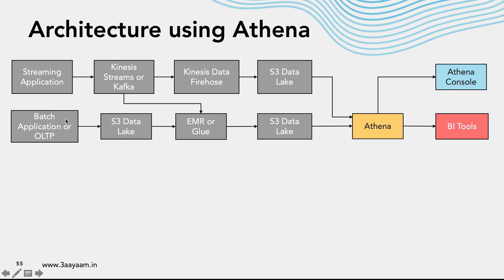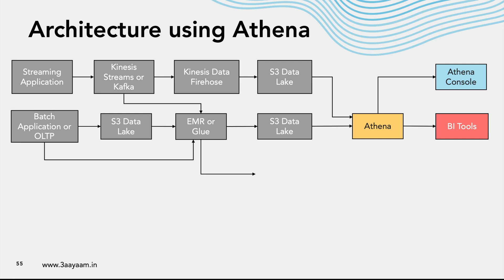The transformed data is stored in the S3 data lake. Since it is in S3, we can use Athena on top of it. Data generated by batch applications, OLTP databases, or streaming applications can be aggregated, transformed, and moved to S3 data lake, and from there we can use Athena — with BI tools as well. Another use case is using EMR to read data directly from OLTP sources using Spark's JDBC connectors, do some processing, and then move it to S3.